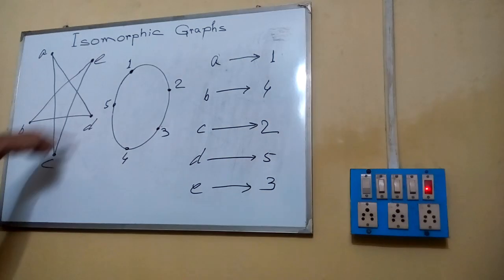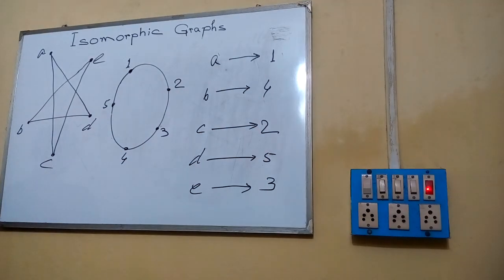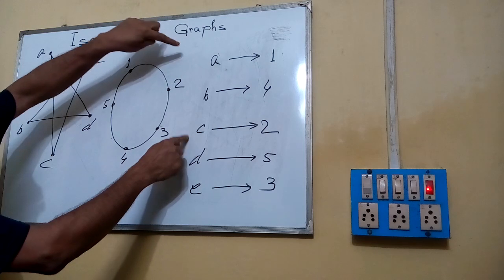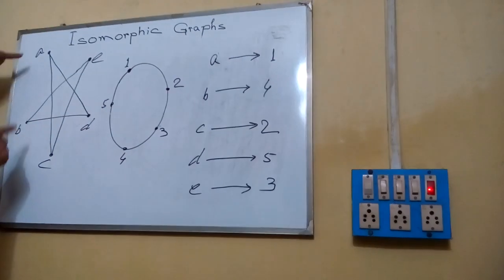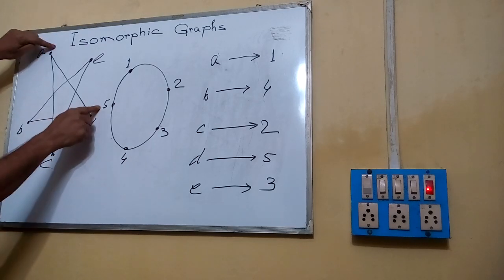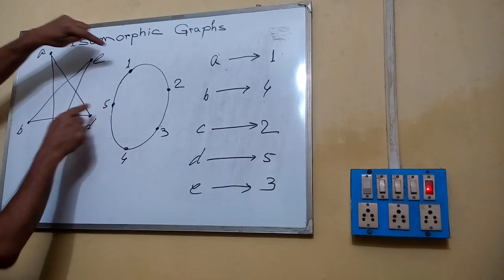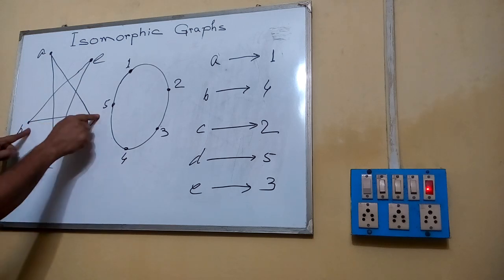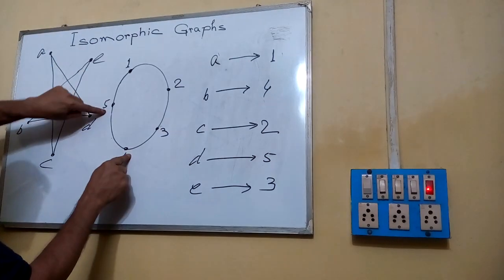The mapping is A→1, B→4, C→2, D→5, E→3. Always check systematically: edge AC is here, and corresponding edge 1-2 is there. Edge AD is here, and corresponding edge 1-5 is there. Edge BD is here, and corresponding edge 4-5 is there.